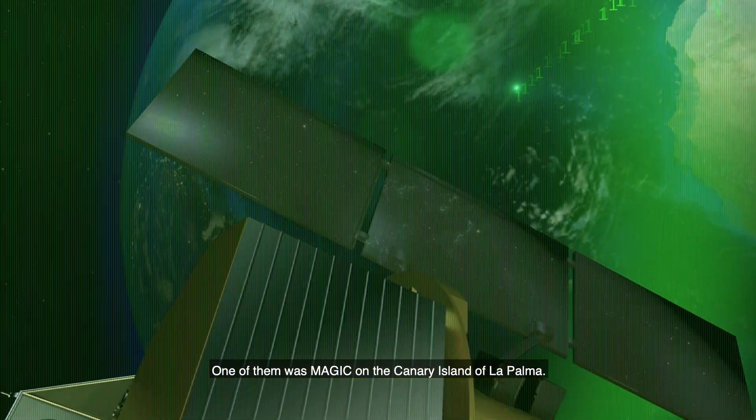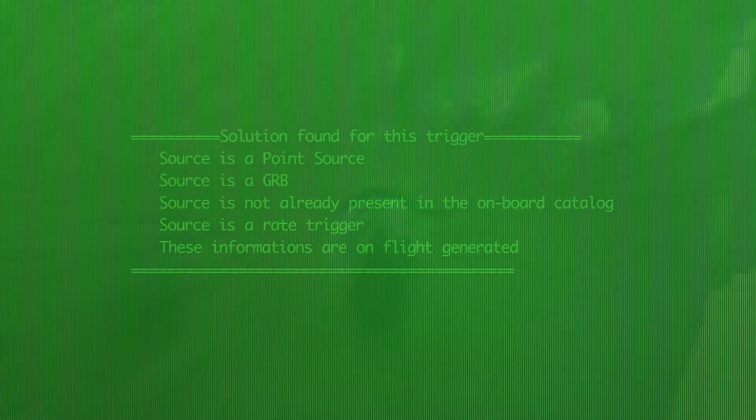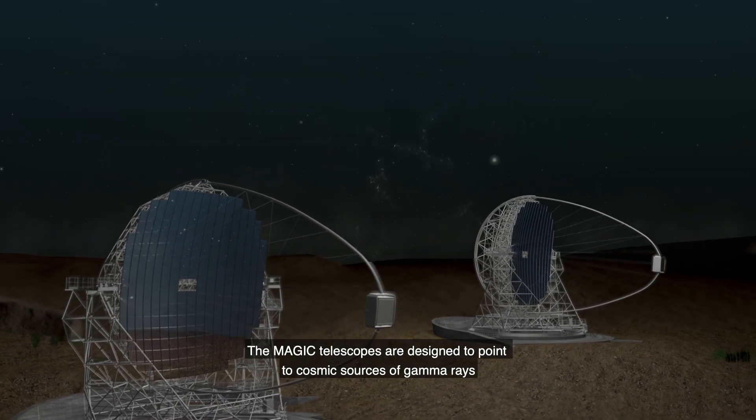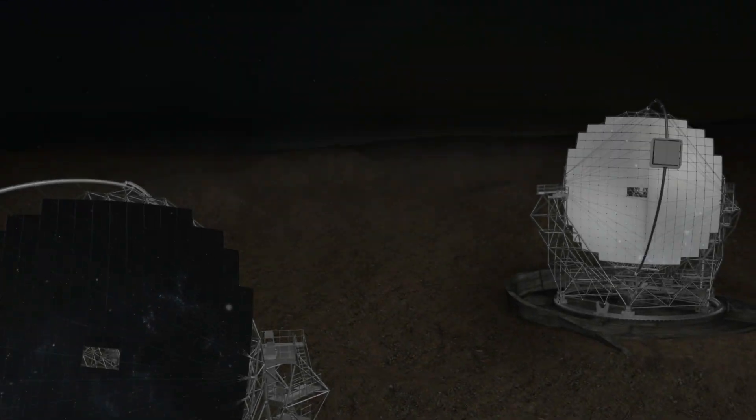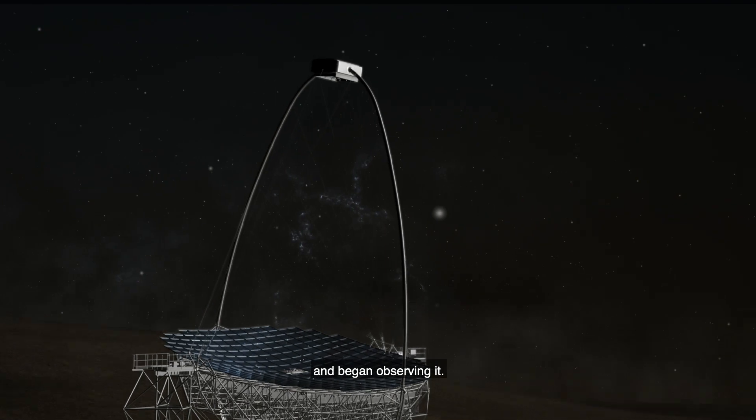One of them was MAGIC on the Canary Island of La Palma. The MAGIC telescopes are designed to point to cosmic sources of gamma rays as quickly as possible. In just 30 seconds, MAGIC turned to the new burst and began observing it.